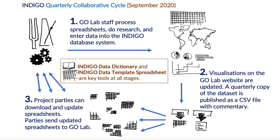Let's go a little deeper into the quarterly collaborative cycle. There are three steps. In the first step, the GoLab staff is processing spreadsheets, doing research, and entering data into the database system. In the second step, these data are displayed in visualizations on the GoLab website. We're publishing a quarterly copy of the dataset as a CSV file and we're publishing commentary. In the third step, project parties are downloading and updating spreadsheets, and can then send these updated spreadsheets to the GoLab. Critical to all of these steps are the Indigo data dictionary and the Indigo data template spreadsheet.